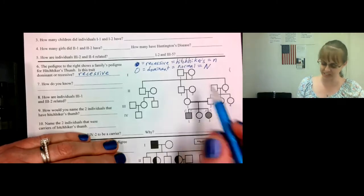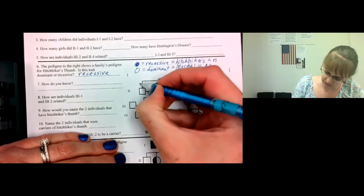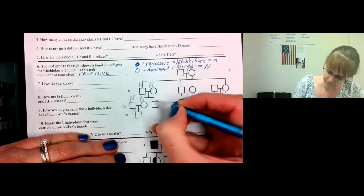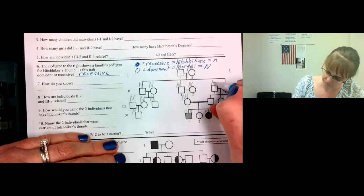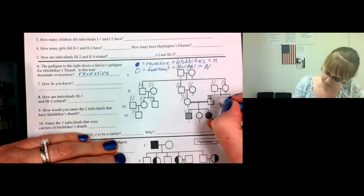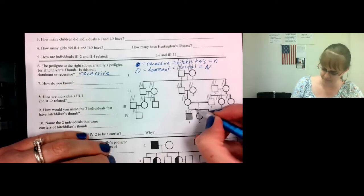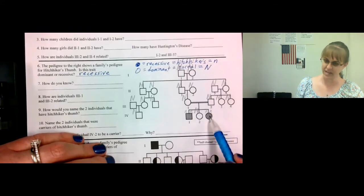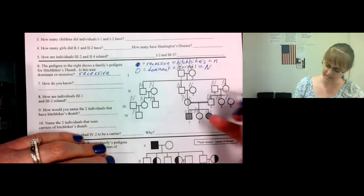So we've labeled the two colored ones with the recessive lowercase. Now every dominant trait will have at least one capital. So capital, capital. Now, these both have a capital, and they have kids with the lowercase. Therefore, they must both be carriers, and they have a lowercase N.